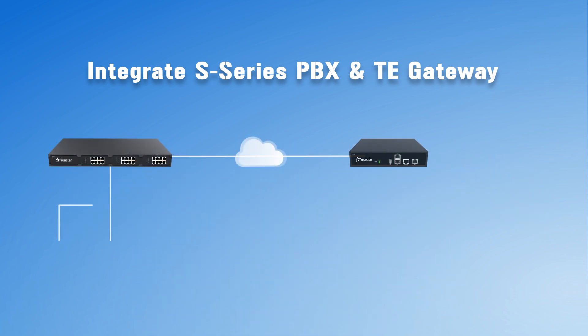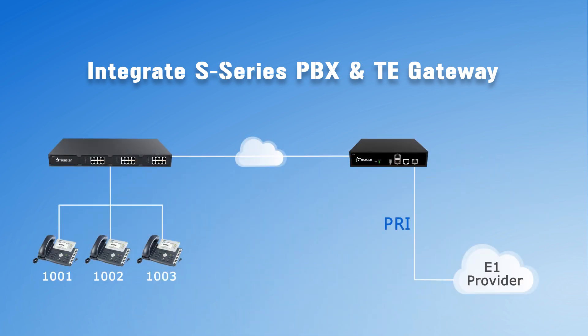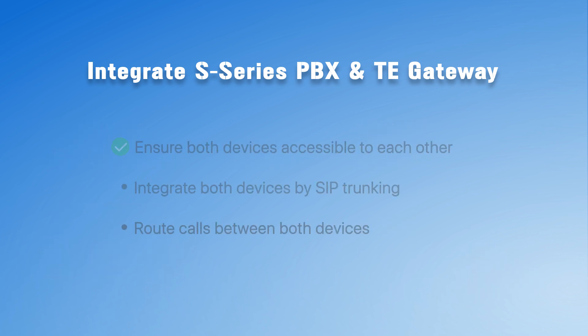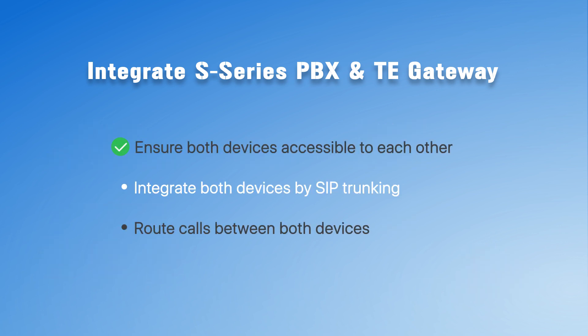Taking this scenario as an example: S300 and TE100 have been deployed in the same local network environment. Both devices are assigned a specific private IP, so they are accessible to each other. Our job is quite simple — create a peer trunk between them directly.